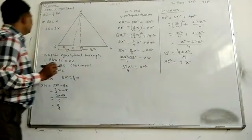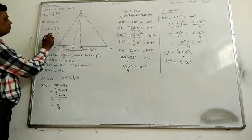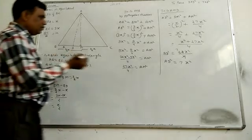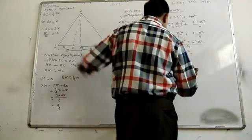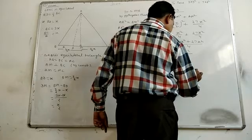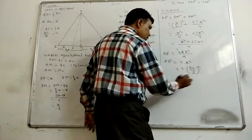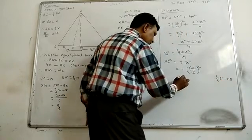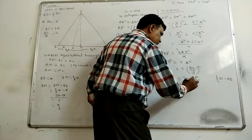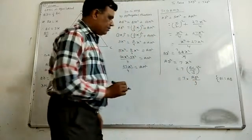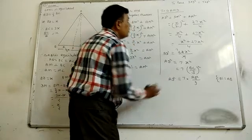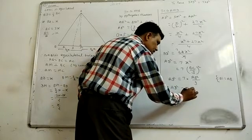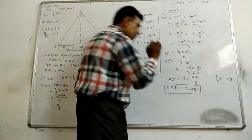Now x is equal to BC upon 3. Putting this value in, and since BC equals AB, we get AD square equals 7 times AB square upon 9. Cross multiplying gives 9 AD square equals 7 AB square. This is it, thanks.